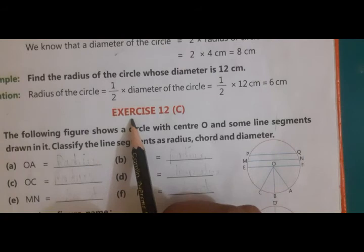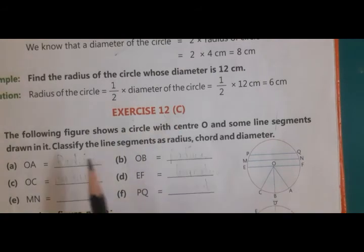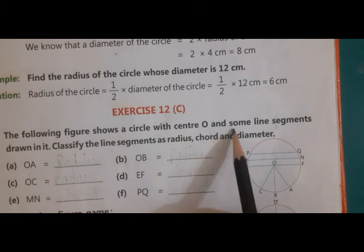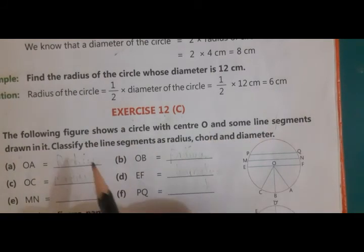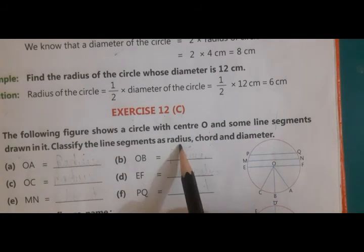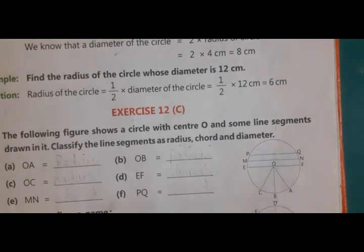Now let us do the exercise 12C. The following figure shows a circle with center O and some line segments drawn on it. Classify the line segments as radius, chord, and diameter. We have to identify which is the radius, which is the chord, and which is the diameter.